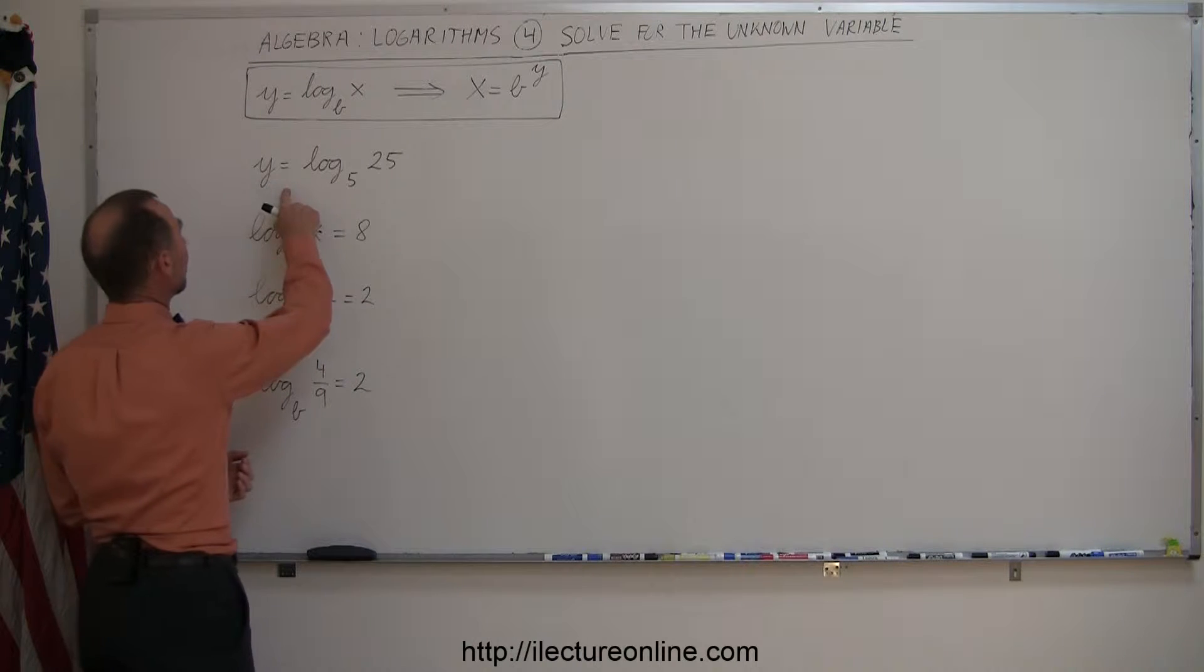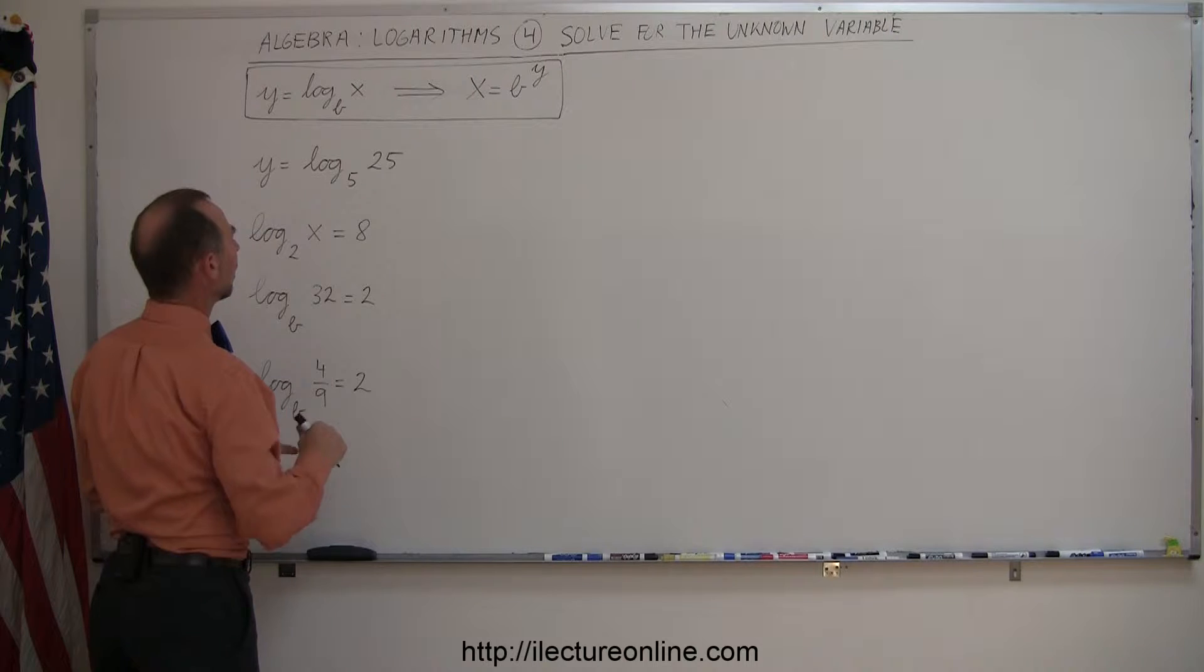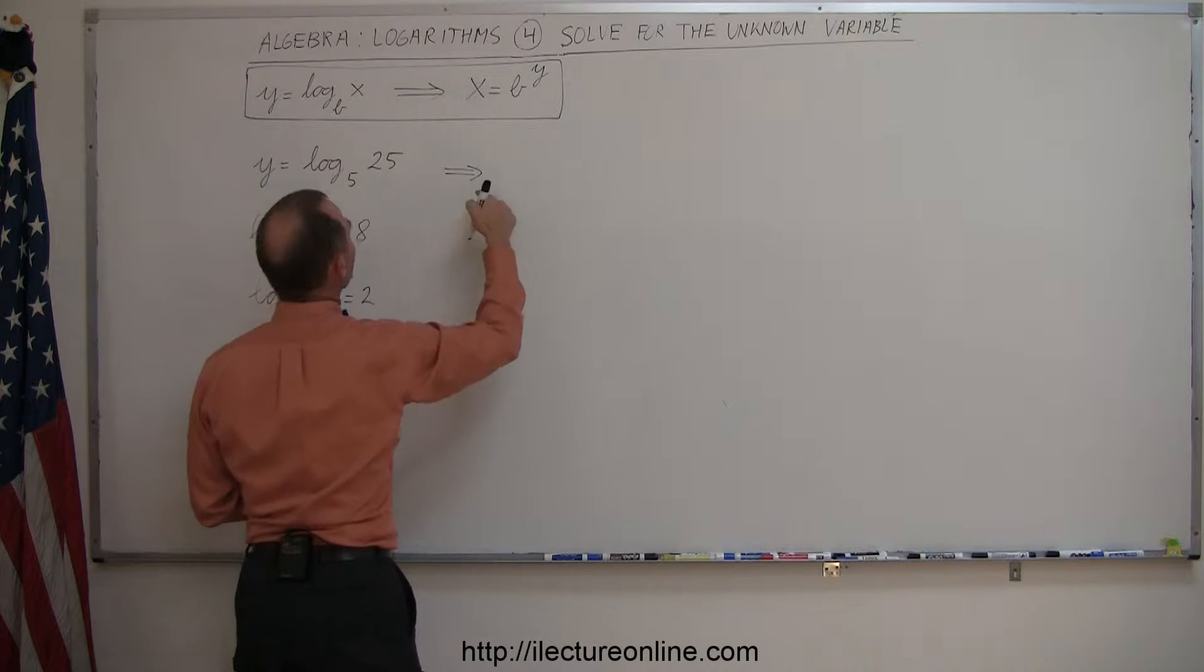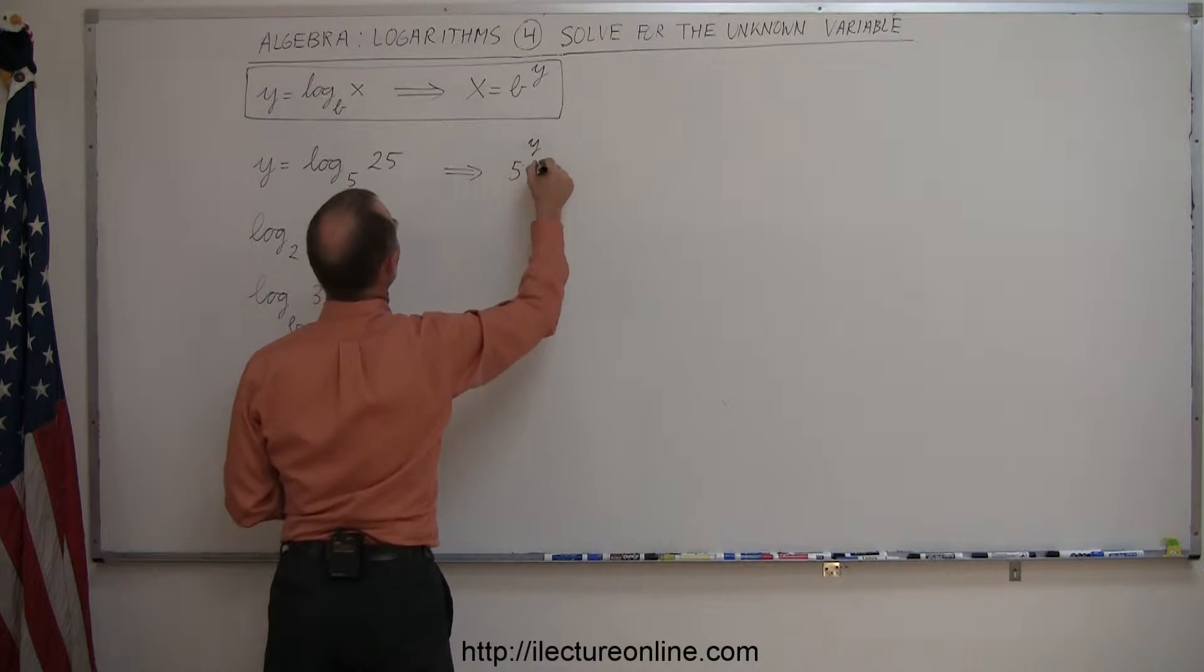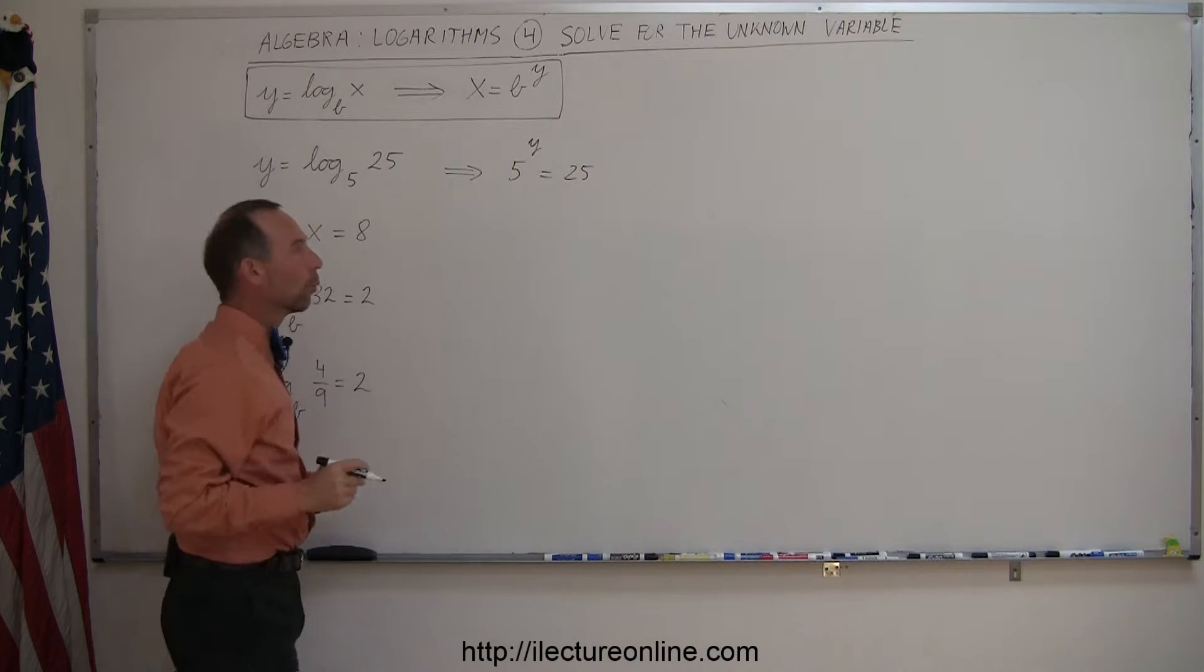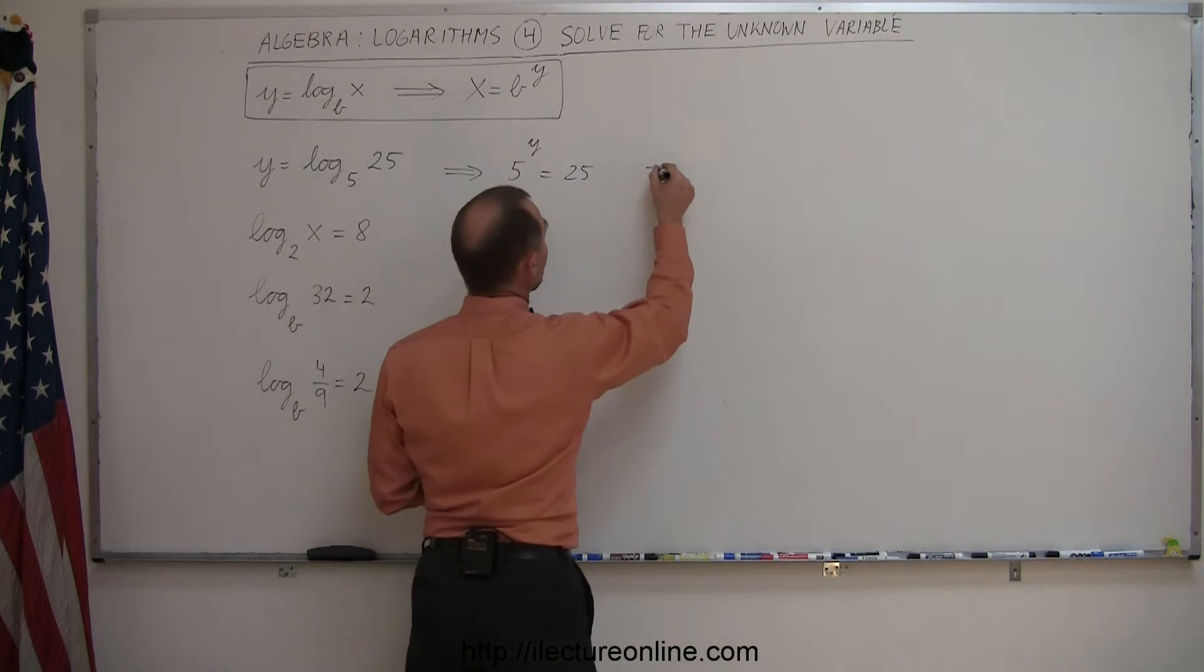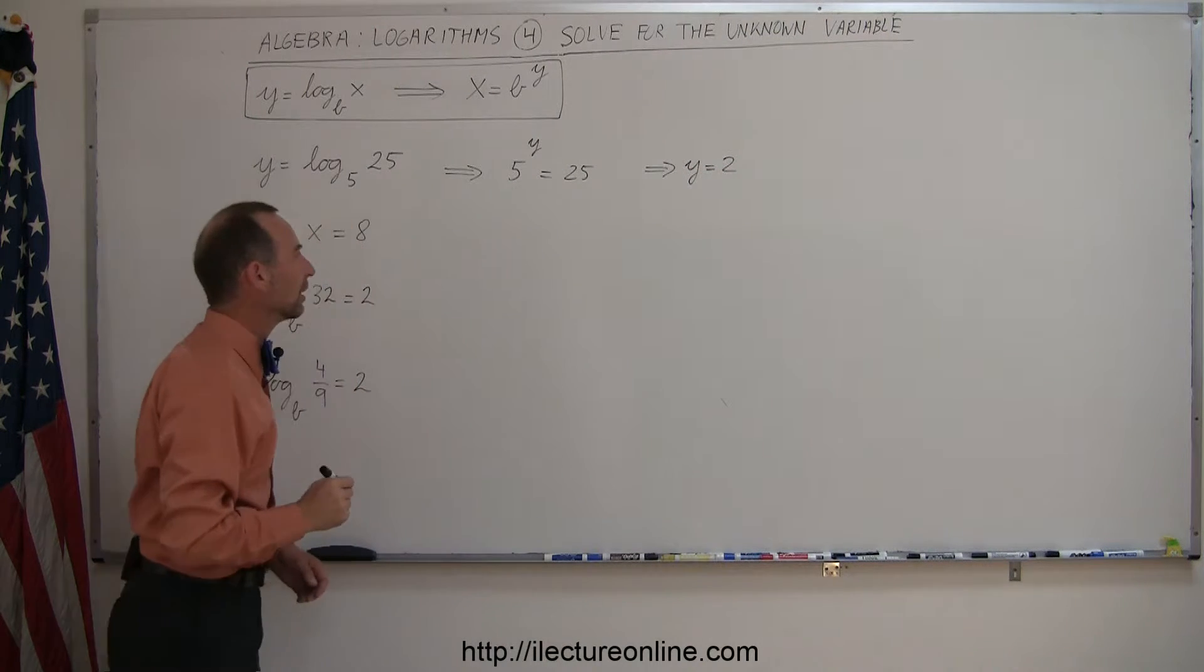So looking at the first one, they want us to evaluate y and so they want us to take the log of base 5. That means putting it into an exponential form. So we take the base, we raise it to y and that should equal the number 25. So the question here is, what should y equal so that when I raise 5 to that exponent I get 25 and the answer here then would be y equals 2 because 5 to the second power equals 25.